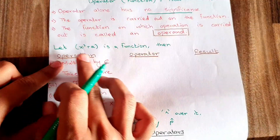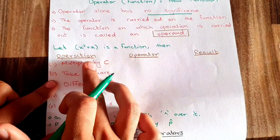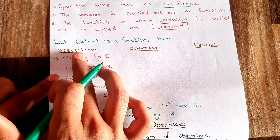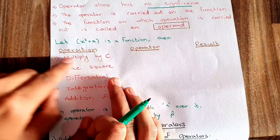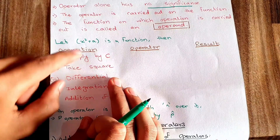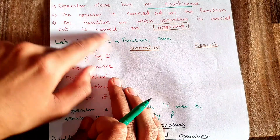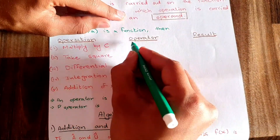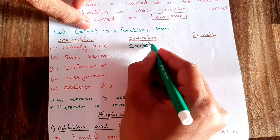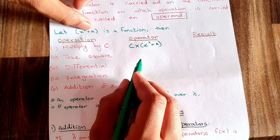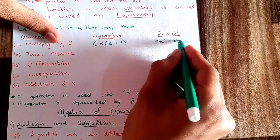For example, x² + a is a function and the operation to carry out on this function is multiply by c. So the operator is c multiplied by the function x² + a, and the result is c(x² + a) = cx² + ca.